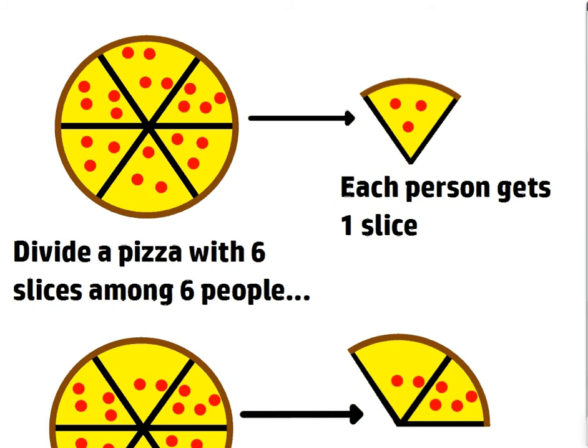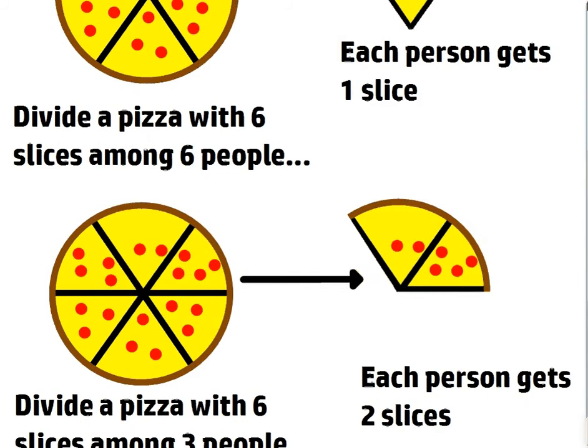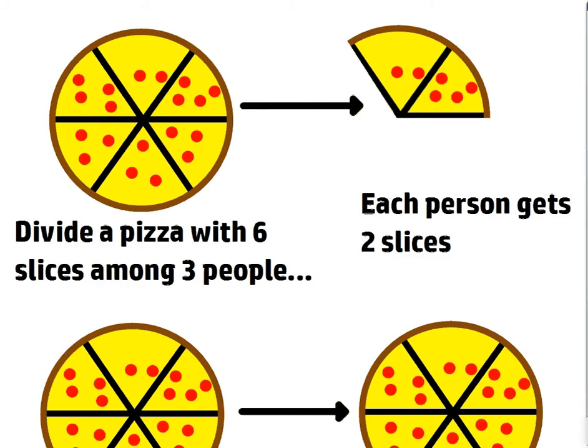Now, let's say you want to divide a pizza with six slices among six people. Again, each person is only going to get one slice. Six divided by six is one. Now, let's divide a pizza with six slices among three people. Well, in this case, each person gets two slices. Two times three is six. Six divided by three is two.